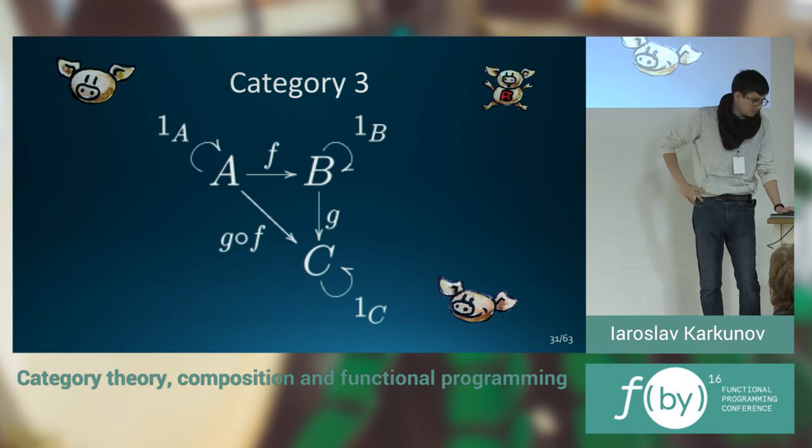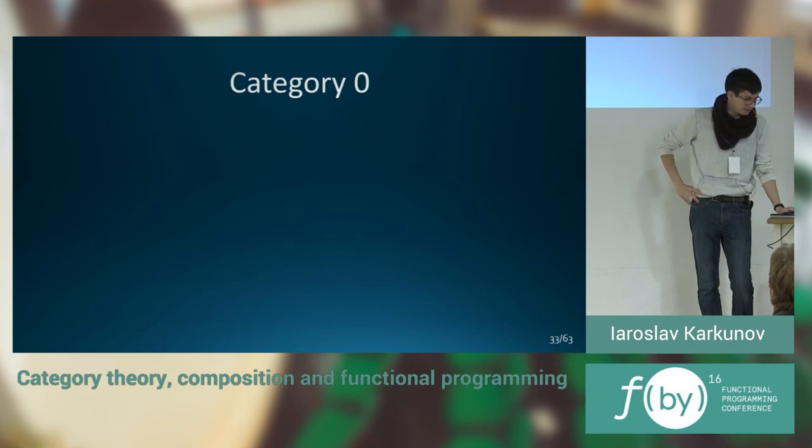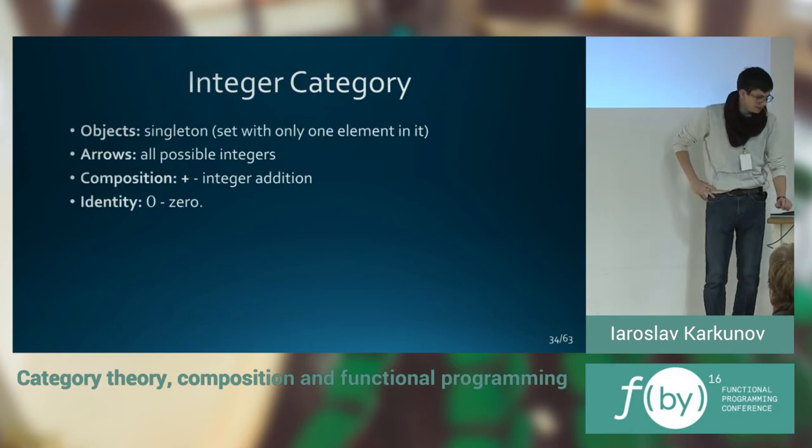There could be even simpler categories. For example, one piggy with one identity arrow is category one. And even simpler, category zero with no objects and no arrows. But that's not interesting, I guess. Let's move to more interesting examples.